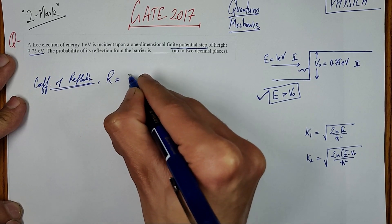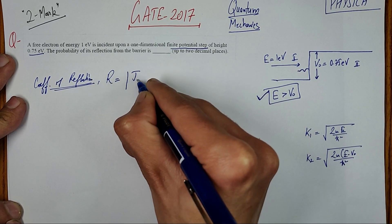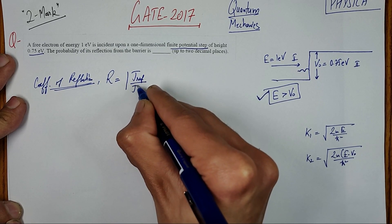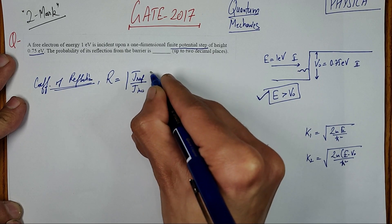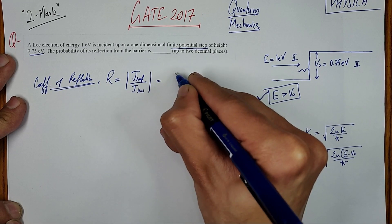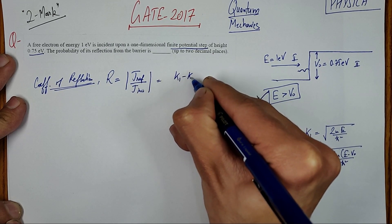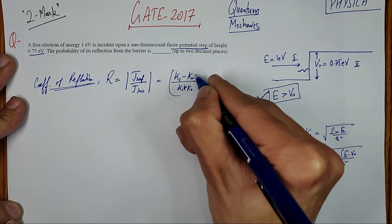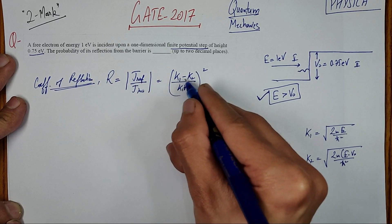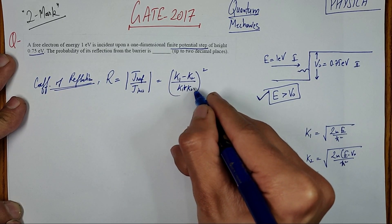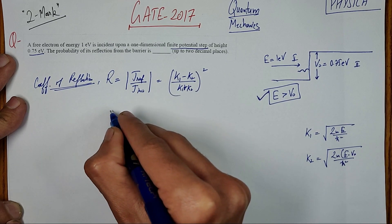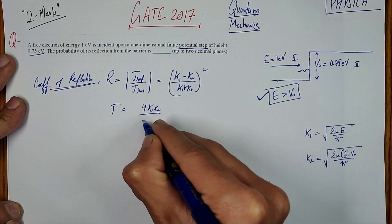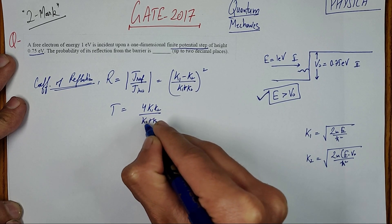The coefficient of reflection R is the ratio of the probability current density of the reflected wave to the incident wave. When we solve this, it comes out to be R = ((k1 - k2) / (k1 + k2))². You should have this formula direct. The transmittance formula is T = 4k1·k2 / (k1 + k2)².